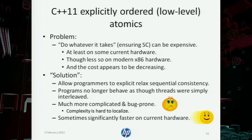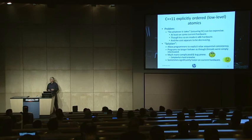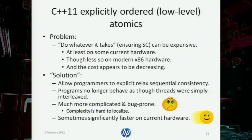The problem is that preserving sequentially consistent semantics requires compiler and hardware heroics, which can be expensive. C++11 also has lower-level primitives that relax these interleaving-based constraints to make things run faster, but they no longer guarantee interleaving-based behavior and are much harder to reason about. If you use them in a library, it's often difficult to isolate that effect — the client may have to worry about it too. Use them with great caution. They do sometimes make things run faster on current hardware, and many of us are trying to convince processor vendors to make that less true over time.